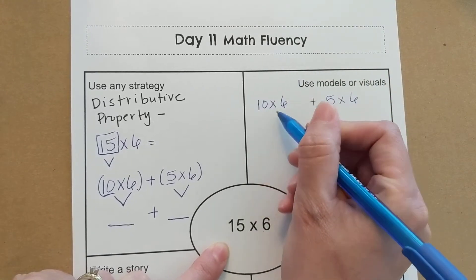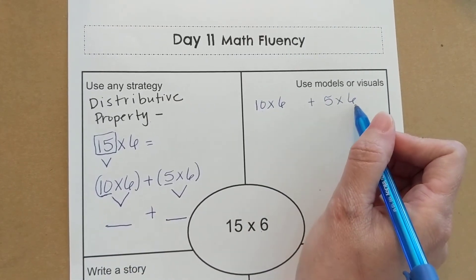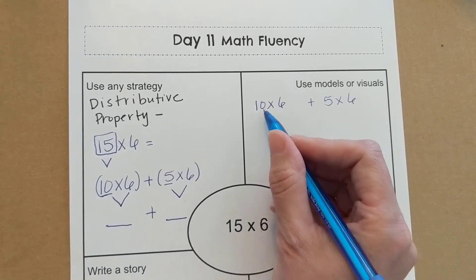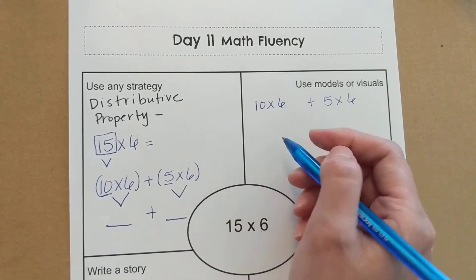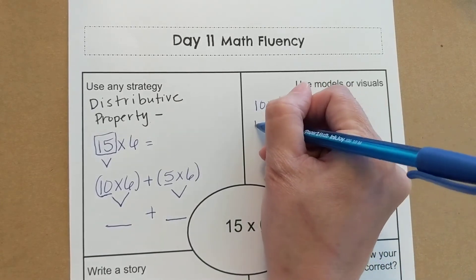I can have 10 groups of 6 or 6 groups of 10, and then 5 groups of 6 or 6 groups of 5. So normally we would make 10 groups of 6, but I think it would be easy to make 6 groups of, either way would be fine. We're going to do 6 groups of 10.